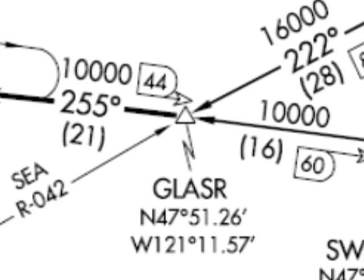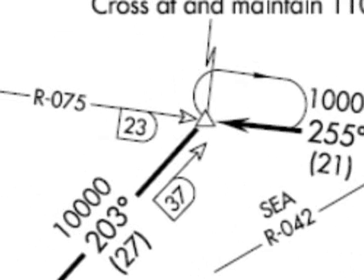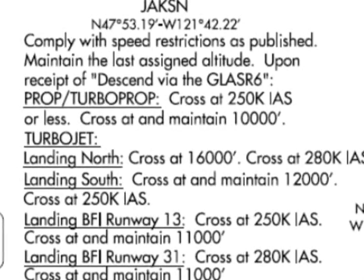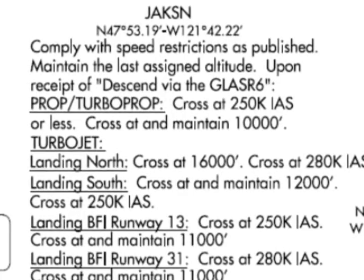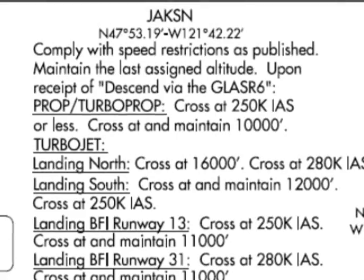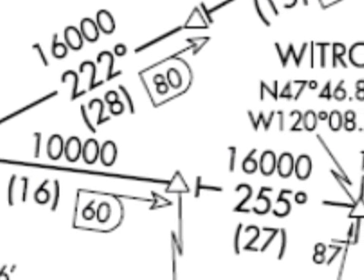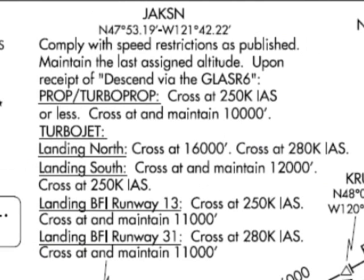Glasser is next on the list, and this is the point where traffic from other directions will meet us. Recall the holding point — if this intersection is busy you may very well be placed into a hold by ATC. At Jackson things get a bit more interesting. You need to look at the instructions, and this is something you should do before you get to this point so that you can plan ahead. We have a speed restriction in effect: depending on where we plan on landing, we may have to cross this point at 280 or 250 knots. We also have hard altitudes we must maintain — 16,000 if landing north or 12,000 if landing south. Those other altitudes were not hard altitudes but references or floors you can't go below. These, however, are hard altitudes and you must be at those before you get to this point.